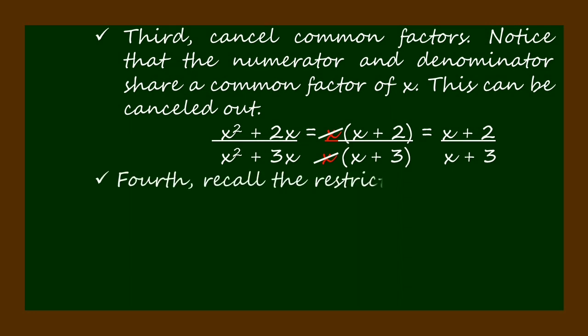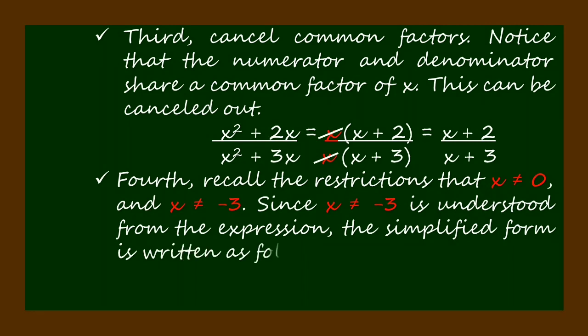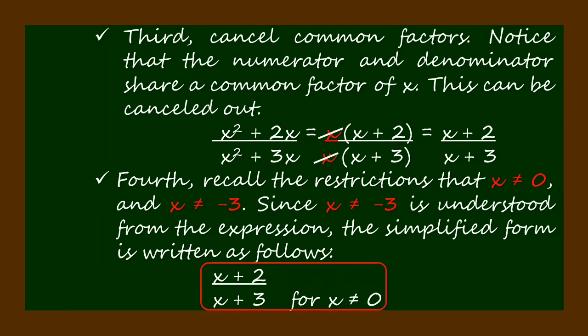Fourth, recall the restrictions that x ≠ 0 and x ≠ -3. Since x ≠ -3 is understood from the expression, the simplified form is written as (x + 2)/(x + 3) for x ≠ 0.